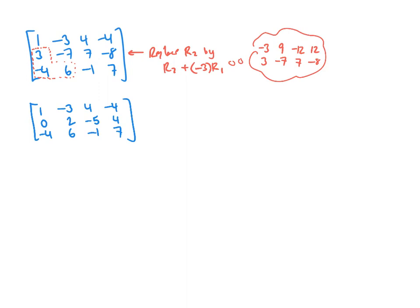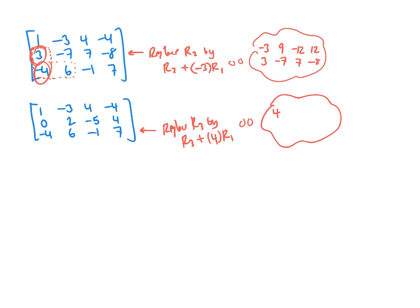We've turned the 3 into a 0. Now let's turn the negative 4 in row 3 into a 0. We replace row 3 by row 3 plus 4 times row 1. Four times row 1 is: 4, negative 12, 16, negative 16. Row 3 is: negative 4, 6, negative 1, 7. Adding: 4 plus negative 4 is 0; negative 12 plus 6 is negative 6; 16 plus negative 1 is 15; negative 16 plus 7 is negative 9.